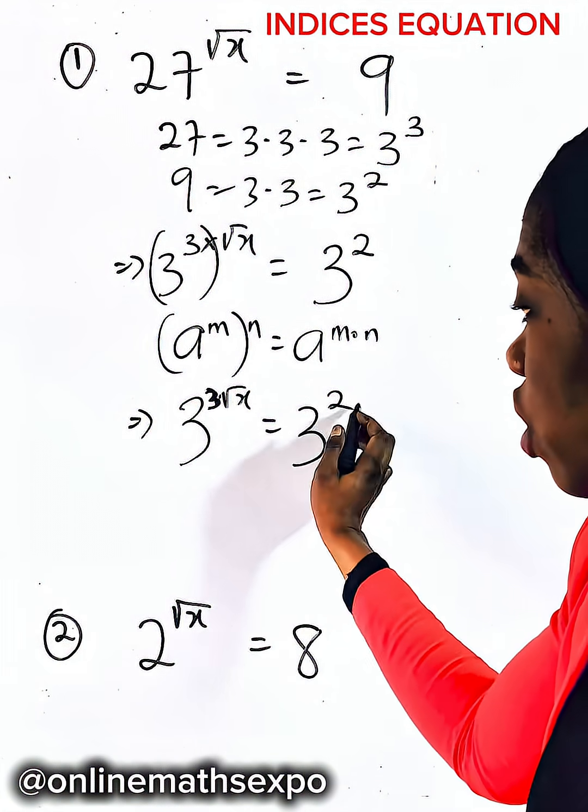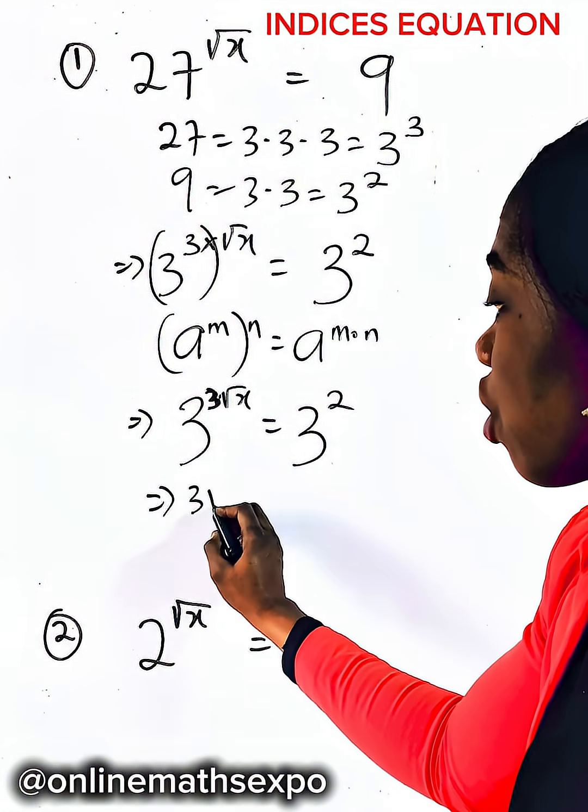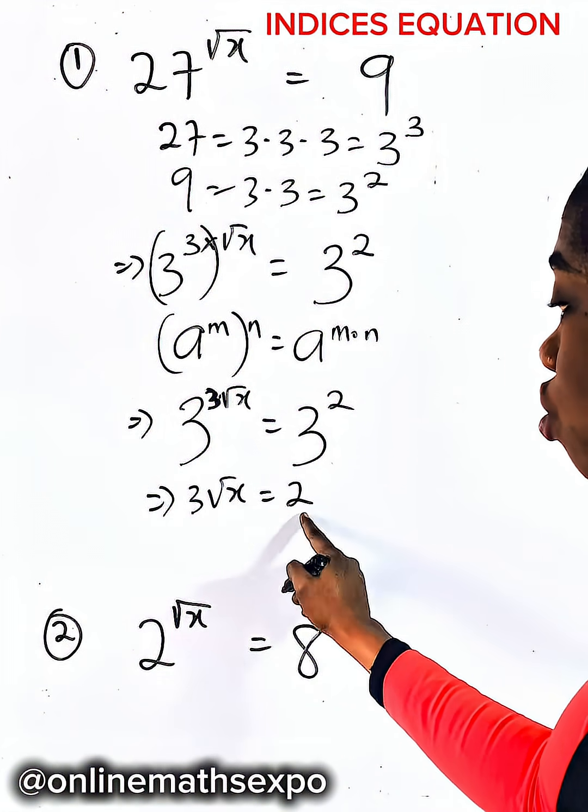The bases are the same so equate powers. So we have 3 root x is equal to 2.